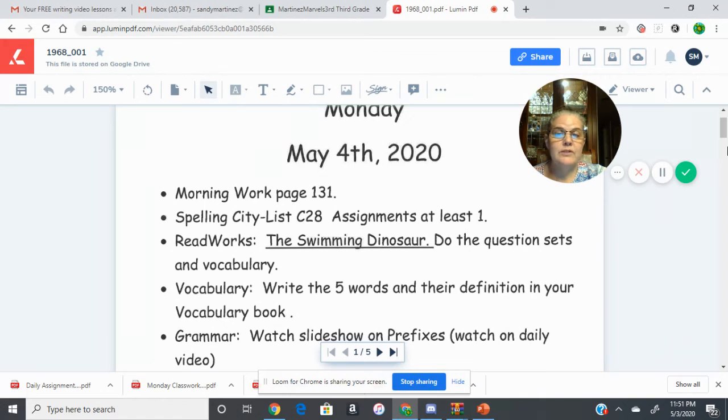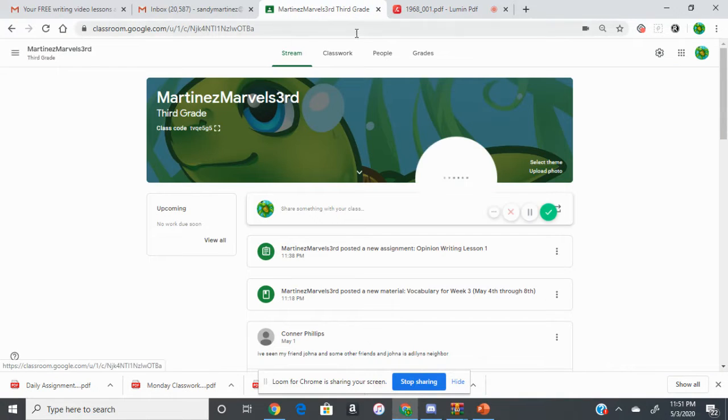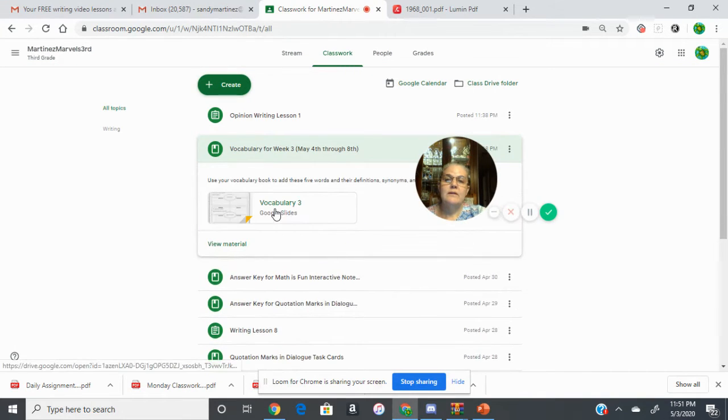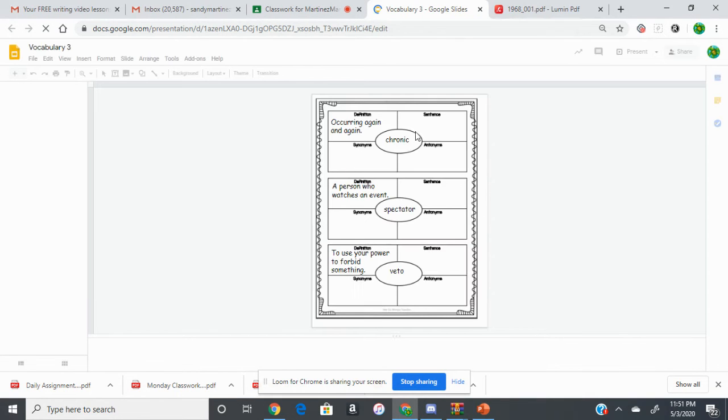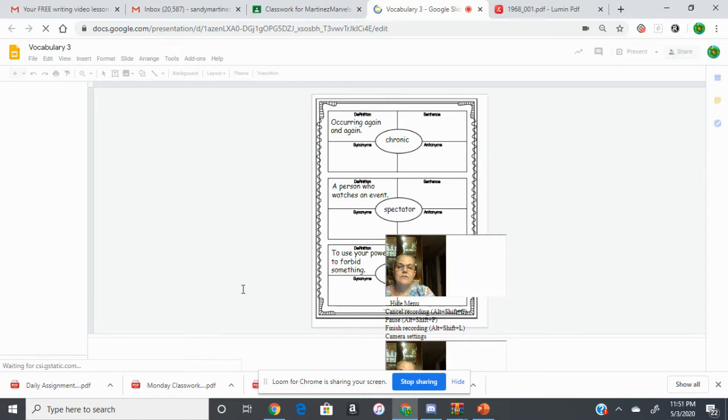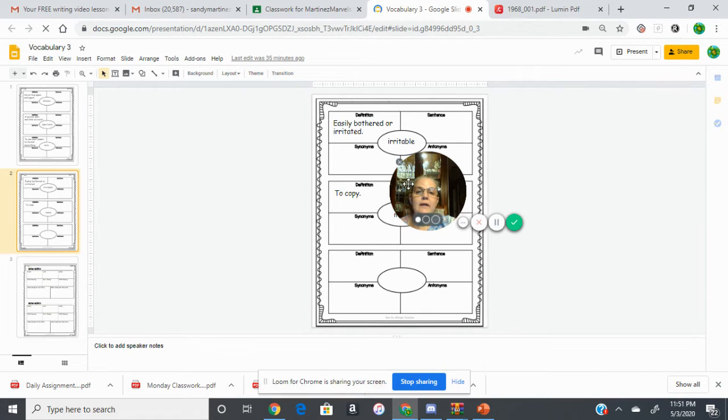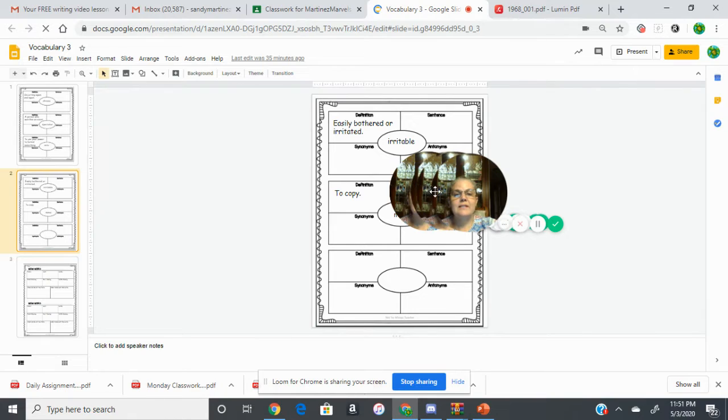We have five new vocabulary words. We're on vocabulary week three. We're going to do those words and their definitions today, found in Google Classroom. You will see that you have vocabulary for week three. Open those slides. So far, I've added just the five words and their definition. This week, we have chronic, spectator, veto, irritable, and mimic. You'll write those words down and do the five definitions.